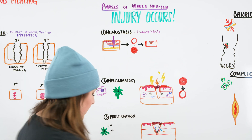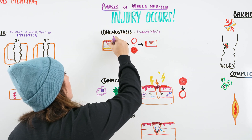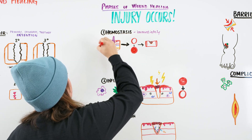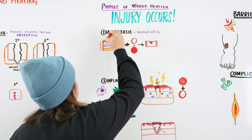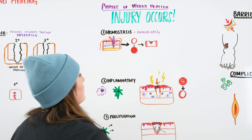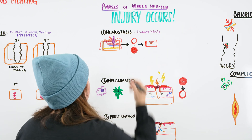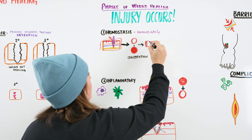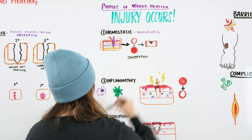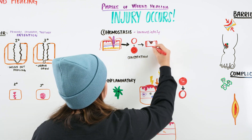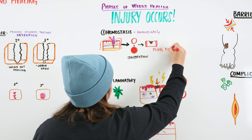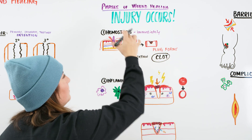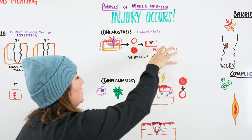As we start bleeding, our body responds with vasoconstriction — constricting the blood vessels. As that constriction occurs, we get platelets starting to aggregate and forming a blood clot. As the platelet plug forms and we eventually get our clot, the whole goal is to go from bleeding to not bleeding. Now that bleeding has stopped, we move into the next phase.